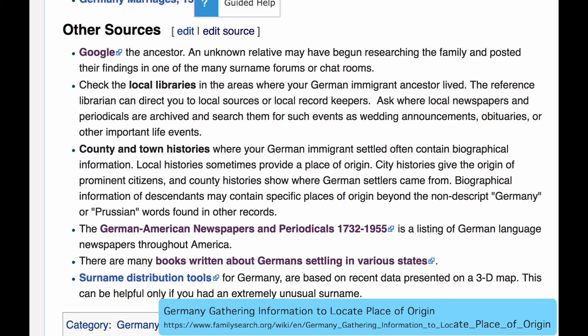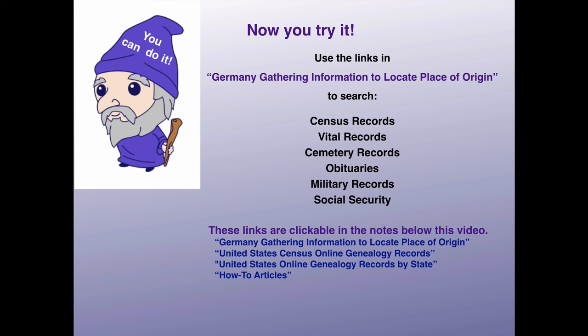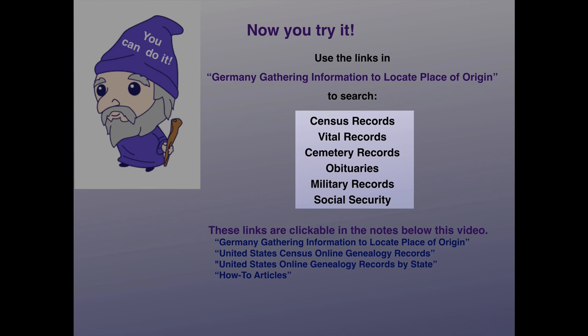Finally, under Other Sources, you will see the advice to check a lot of local and county records. Information on searching those can be found on the wiki page for the county in the United States where your ancestors lived. Now you try it. Go to the article Germany Gathering Information to Locate Place of Origin, and use the information and the links there to search these six record groups for clues to the town of origin you need in Germany.